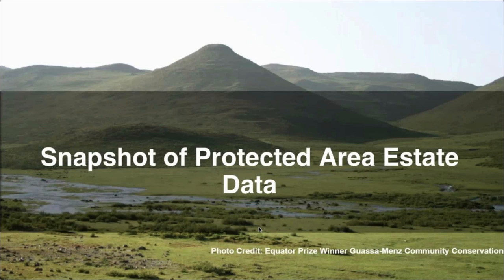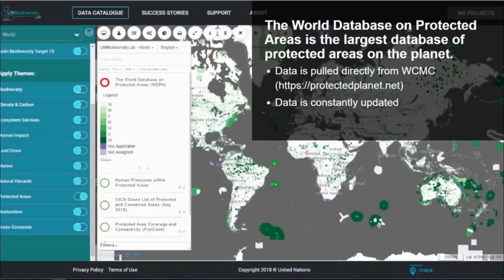First, data on the global protected area status. We can't really talk about conservation without mentioning the main policy tool that policymakers reach for — protected areas. The first key layer is the World Database on Protected Areas, the largest database of protected areas on the planet. It includes legally defined protected area boundaries as reported by governments for both marine and terrestrial realms. We pull this data in directly from UNEP WCMC in Cambridge, so the data in UN Biodiversity Lab is constantly updated whenever the WDPA is updated every month.